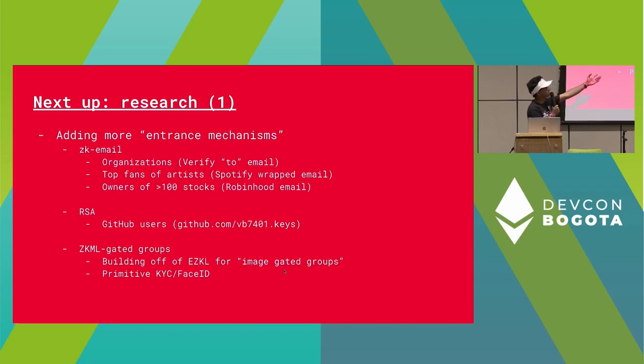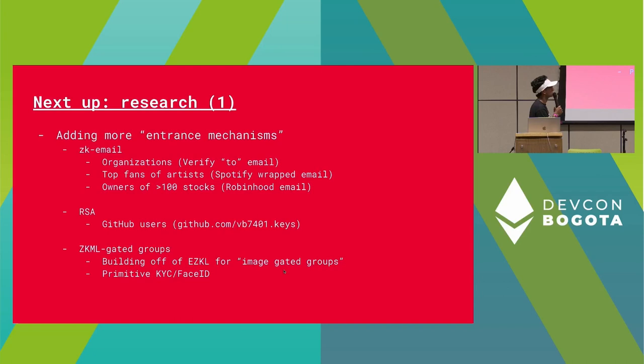In addition, GitHub users — if you go to your username and then type dot keys, it'll store all your public RSA keys or ECDSA keys that you use to do SSH. And so from there we can make GitHub groups.